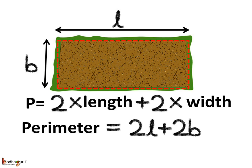In the formula of perimeter, the length and width are expressed by the variables — say length by variable l and the width by the variable b. So the perimeter becomes 2 multiplied by l plus 2 multiplied by b. In short, perimeter P is equal to 2l plus 2b. This is called generalization, that is making a formula or statement which is true for all specific cases — here the perimeter of any rectangle. So this formula is true for all rectangles no matter what length and width are.